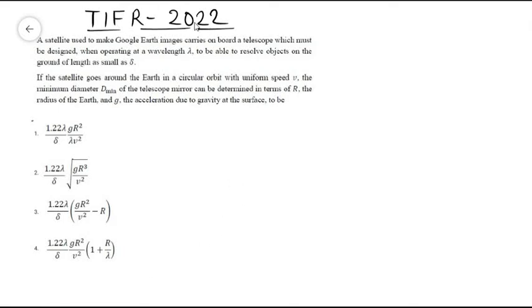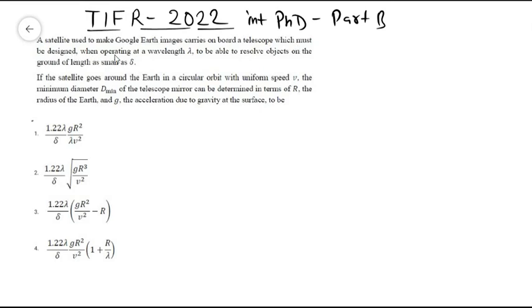This is a question from TIFR 2022 Integrated PhD Part B. It says that a satellite used to make Google Earth's images carries on board a telescope which must be designed, when operating at a wavelength lambda, to be able to resolve objects on the ground of length as small as delta.